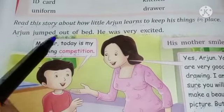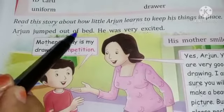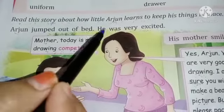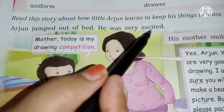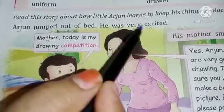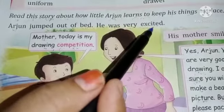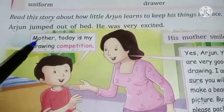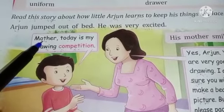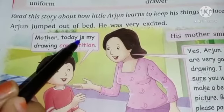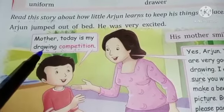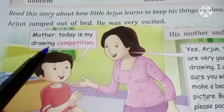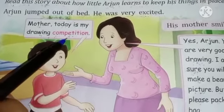Arjun jumped out of bed. Arjun bed से कूदा. He was very excited. वो बहुत excited था. Excited means उत्साहित. Arjun is saying to his mother, Mother, today is my drawing competition. Mommy, आज मेरा drawing competition है.